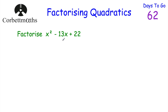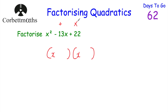This time we've been asked to factorise x squared minus 13x plus 22. Feel free to pause the video and try this one. We set up our brackets with x and x at the front. We want two numbers that multiply together to give 22 and add together to give negative 13. Because they multiply to a positive and add to a negative, both numbers must be negative. I'm thinking negative 11 and negative 2: negative 11 times negative 2 is positive 22, and negative 11 plus negative 2 is negative 13. So the answer is x minus 11 times x minus 2.